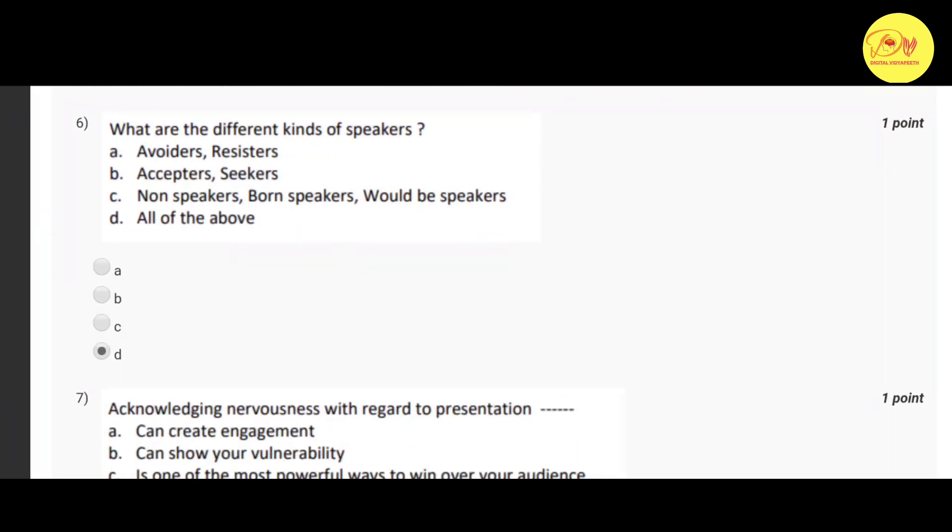Our sixth question is what are the different kinds of speakers? Correct option is D, all of the above, that is avoiders, resistors, acceptors, seekers, non-speakers, born speakers, would-be speakers.